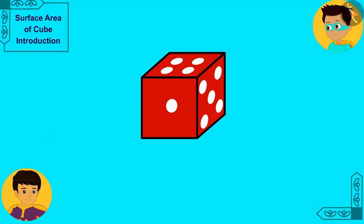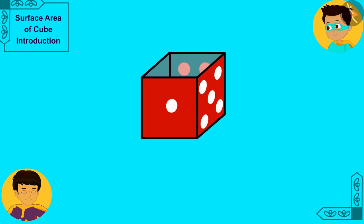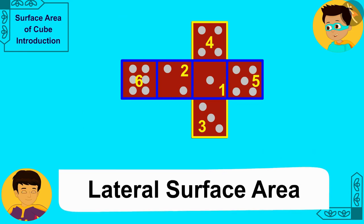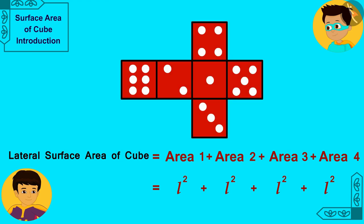And Manas, what if we have to cover only the standing or vertical surfaces of the dice? The sum of the areas of all the sides that are left behind after you remove the bottom and the top faces of any cube is called the lateral surface area of that cube.